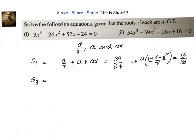S₃ is equal to (a/r) × a × ar, which is equal to a³. And that is equal to -d/a, that is -16/54. That means a³ equals to